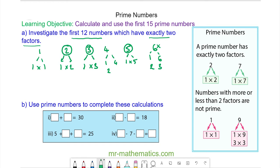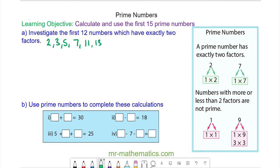Do you want to try and find the next nine prime numbers? You can pause the video and resume it when you're ready. So the next nine prime numbers are 7, 11, 13, 17, 19, 23, 29, 31, and 37.